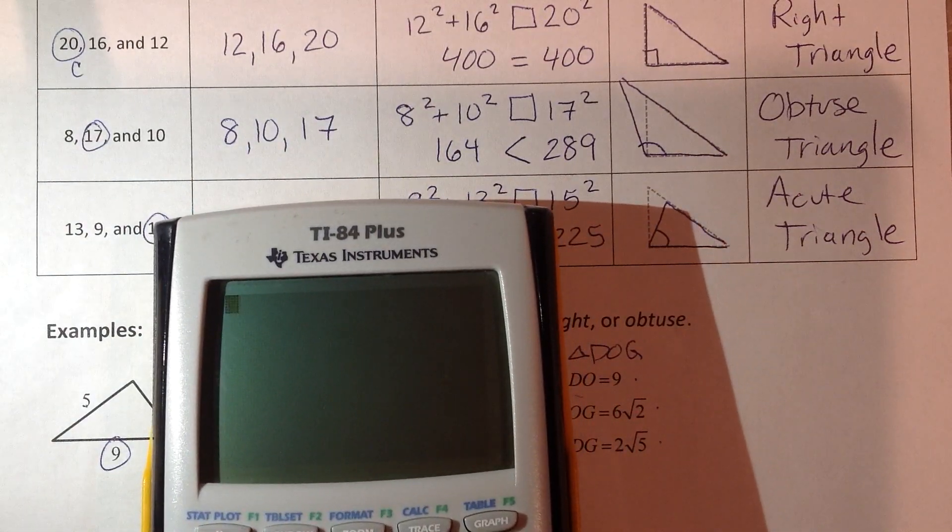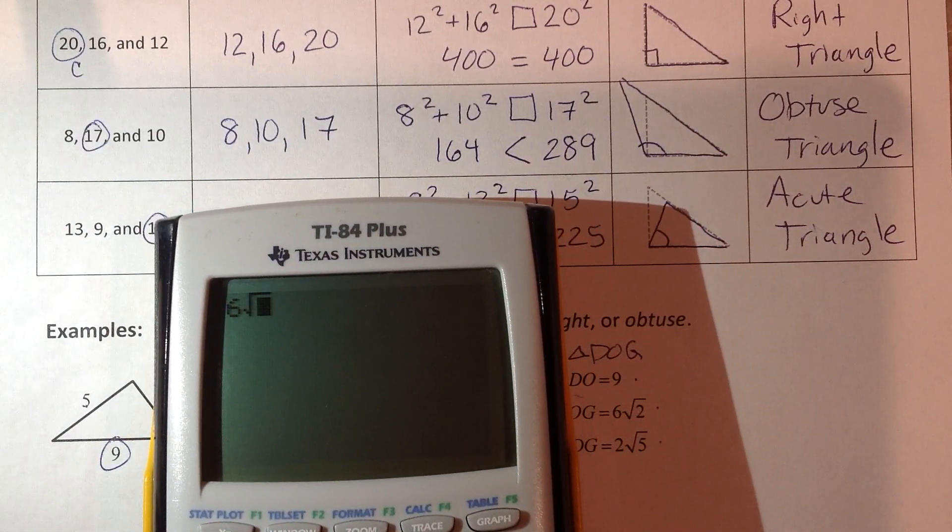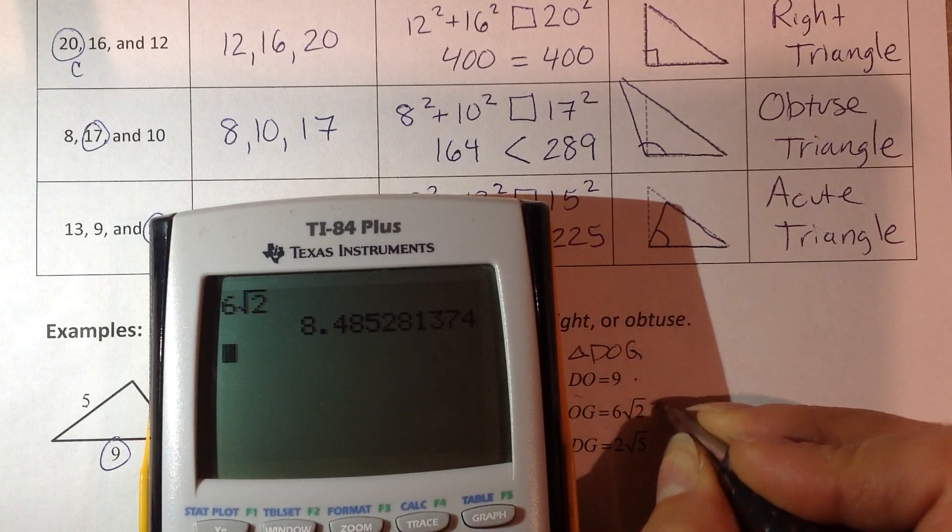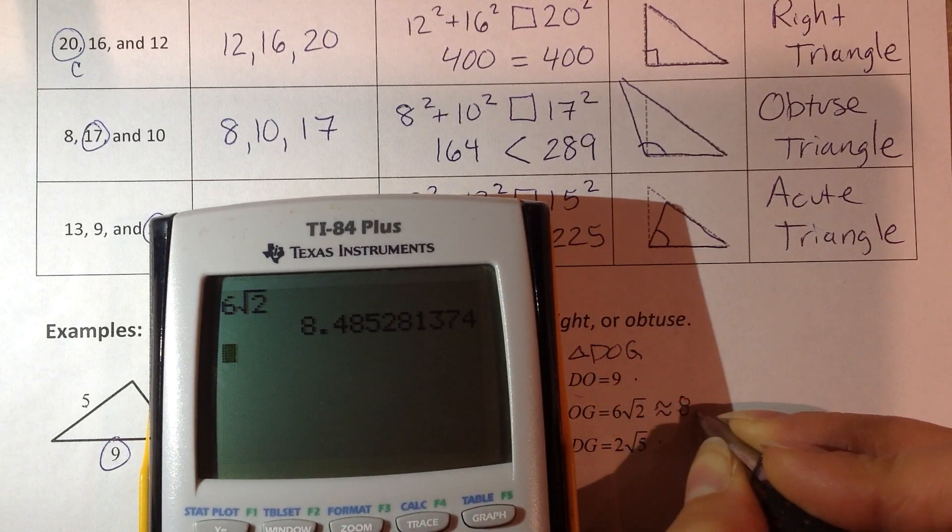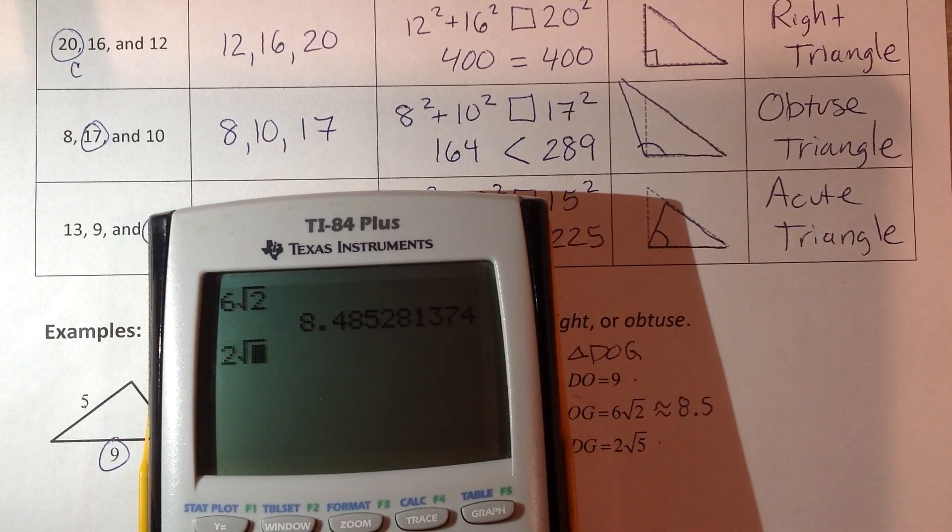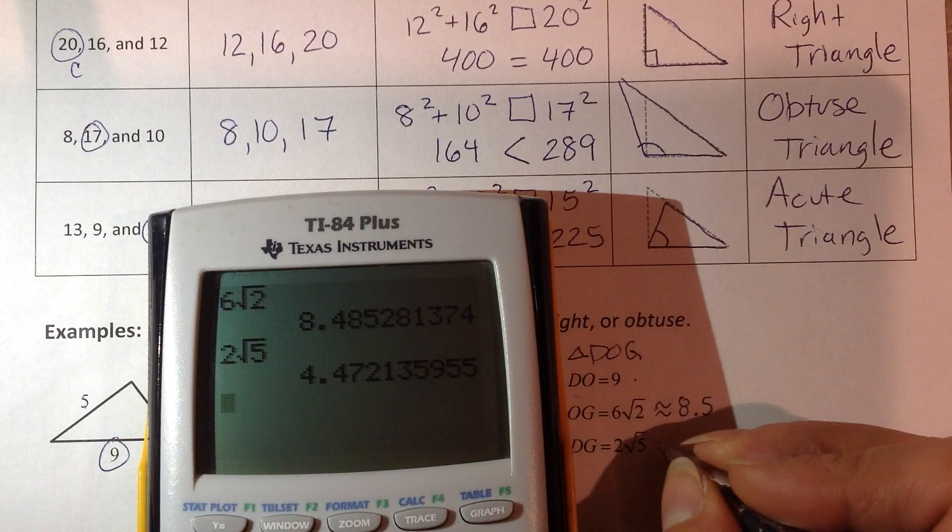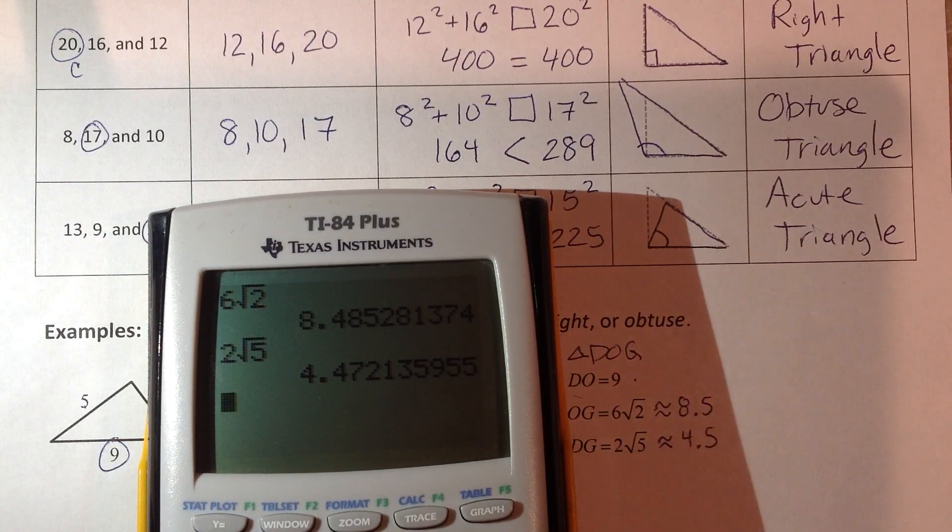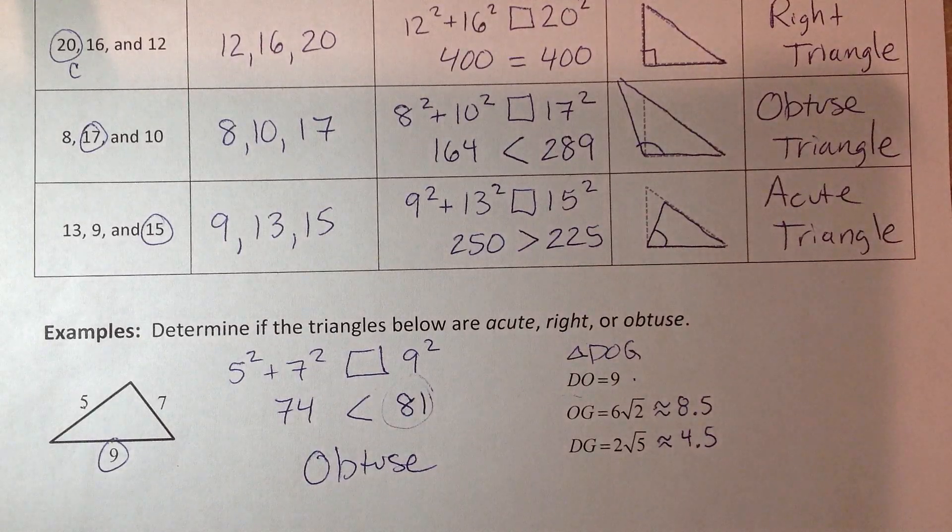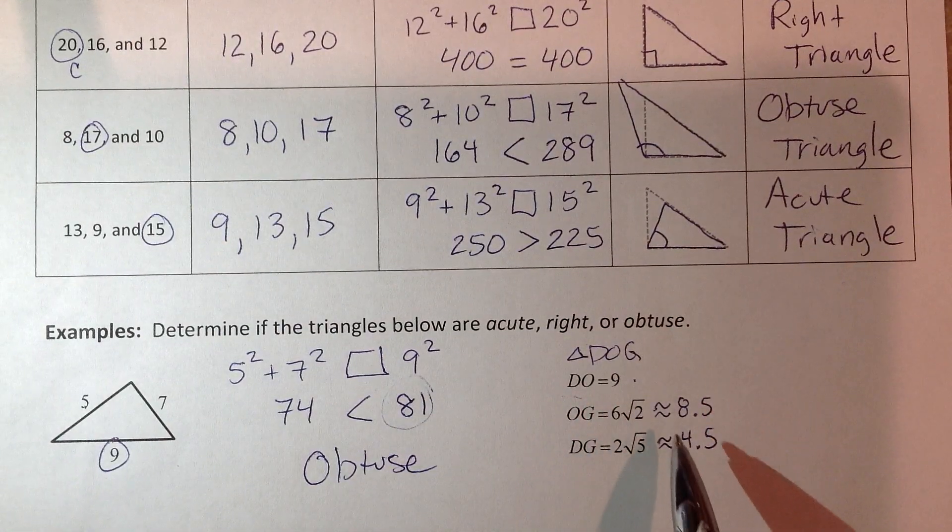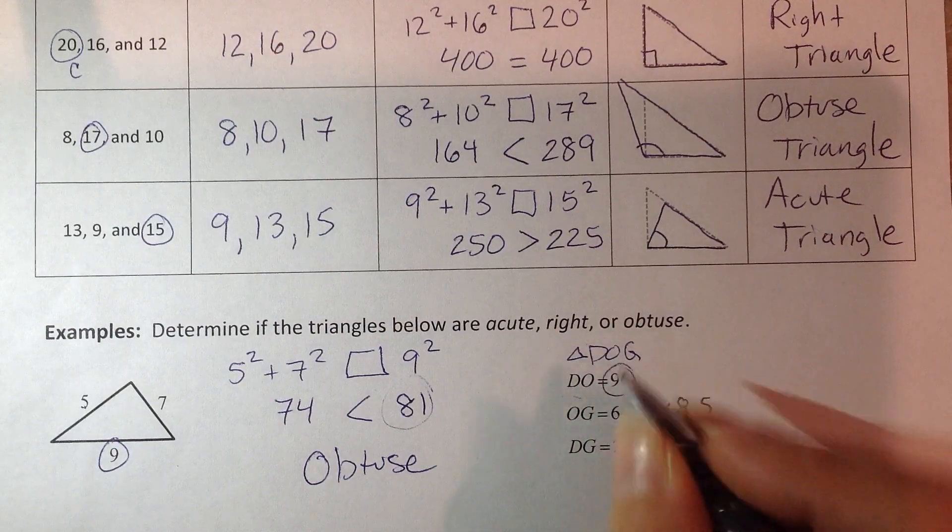So we're going to do 6 square root of 2. So we're going to get about 8.5. And 2 square root of 5 we're going to get about 4.5. Well now I can look at these numbers. Now they make sense to me. This one is going to be the biggest.